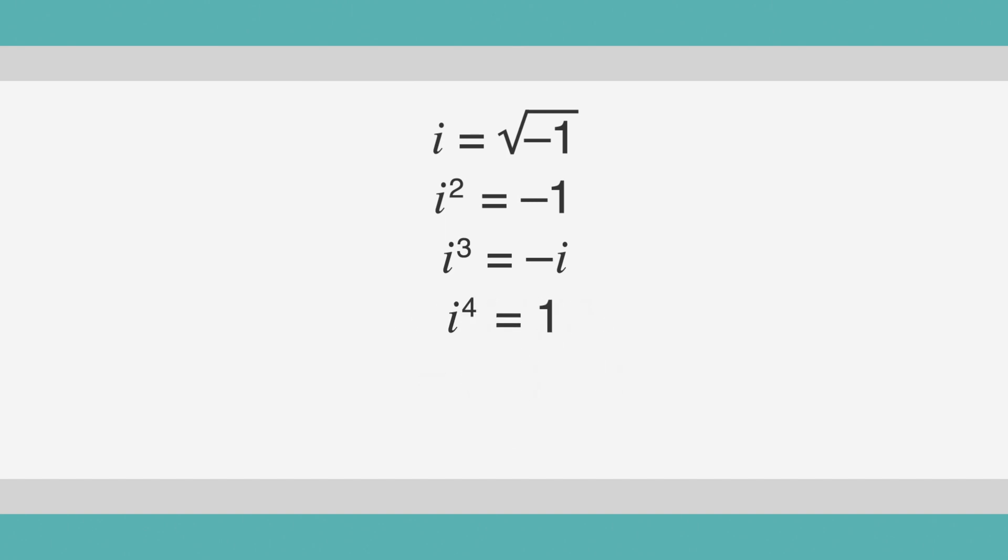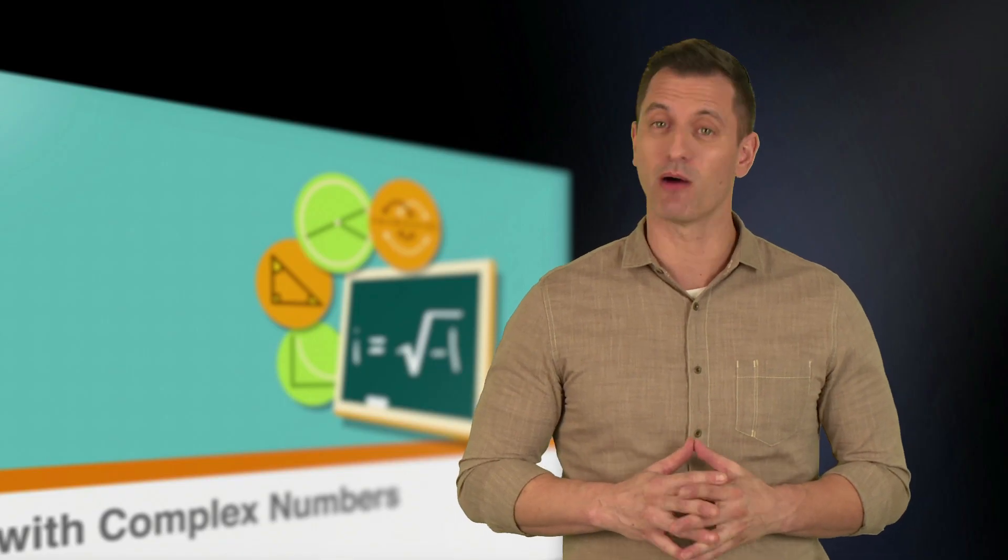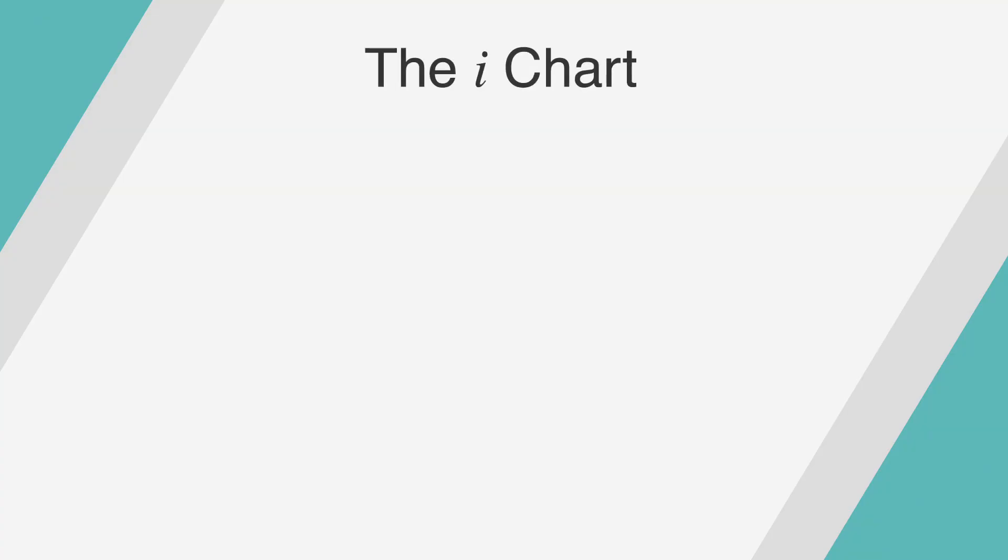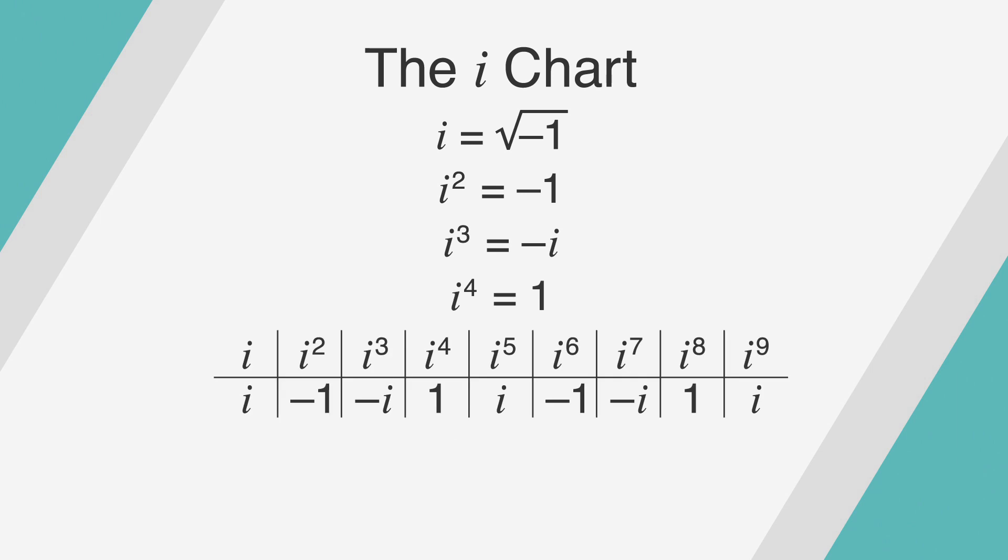Knowing these rules about i can be very helpful. So helpful, in fact, that I'm going to give you a chart to help you study. This is the i chart. The exponents of i will continue in this pattern. So i to the 16 will be equal to 1, as will i to any exponent that is a multiple of 4, like i to the 36 and i to the 400.